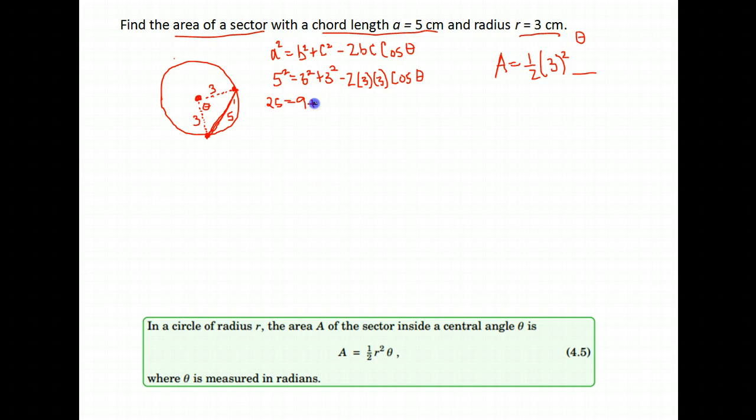So we get 25 equals 9 plus 9 minus 18 cosine of theta. We would subtract these 9's from both sides, which is a total of 18.